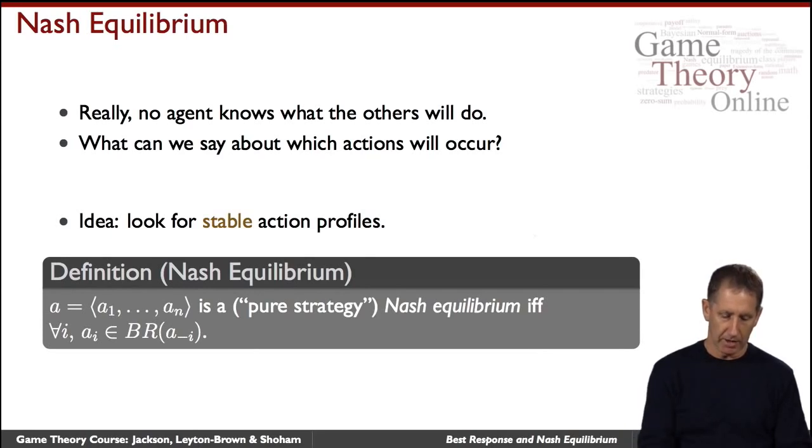Specifically, we'll look at an action profile here, a_1 through a_n, and we'll say that it's a Nash equilibrium, and later on we'll tell you why we call it specifically a pure strategy Nash equilibrium, if it's the case that, for every agent, that action, a_i, associated with the agent is your best response to all the rest.